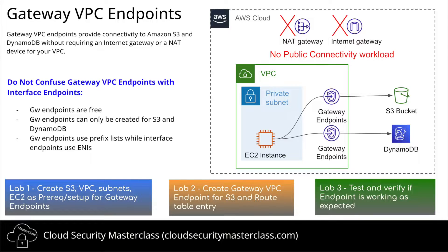Gateway endpoints can only be created for S3 and DynamoDB, so if you are looking to enable private connectivity to other managed services, you will have to use interface endpoints. The third big difference is the mechanism by which these endpoints operate: gateway endpoints create a prefix list which can be attached to a route in a VPC, while interface endpoints create an ENI in the VPC and use AWS PrivateLink.